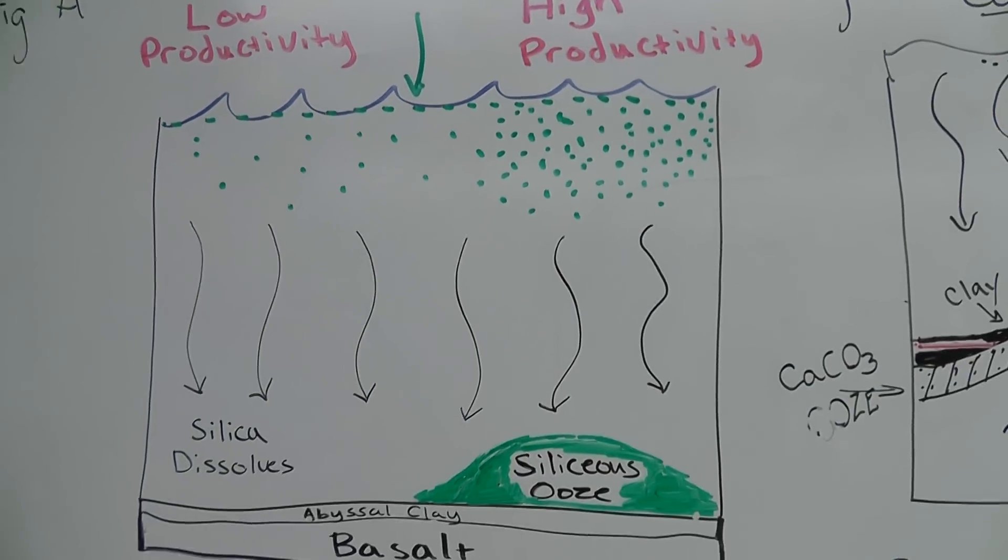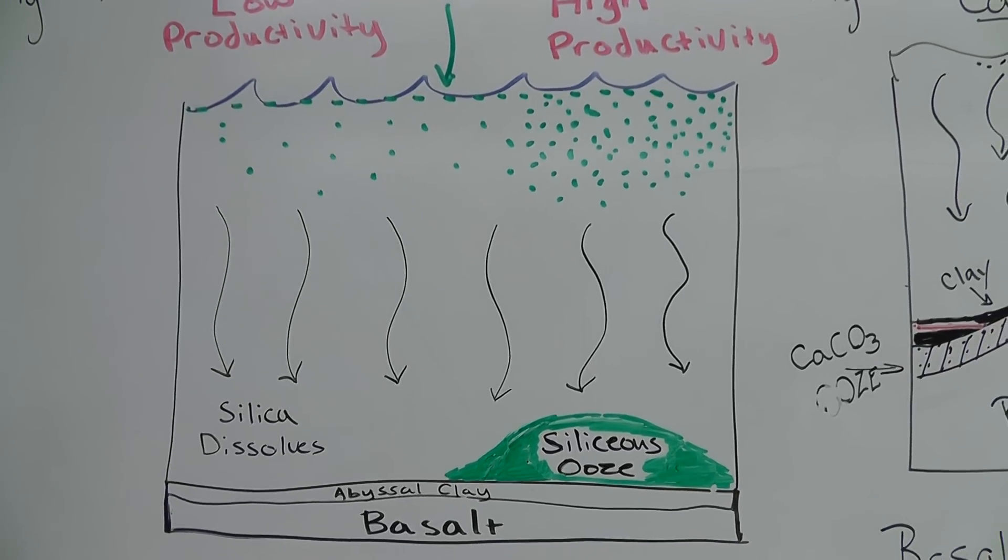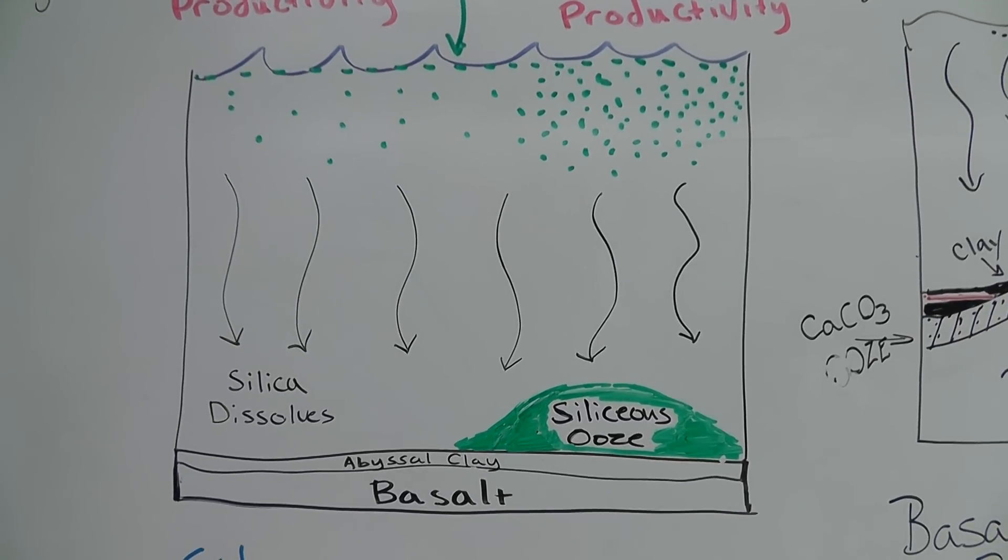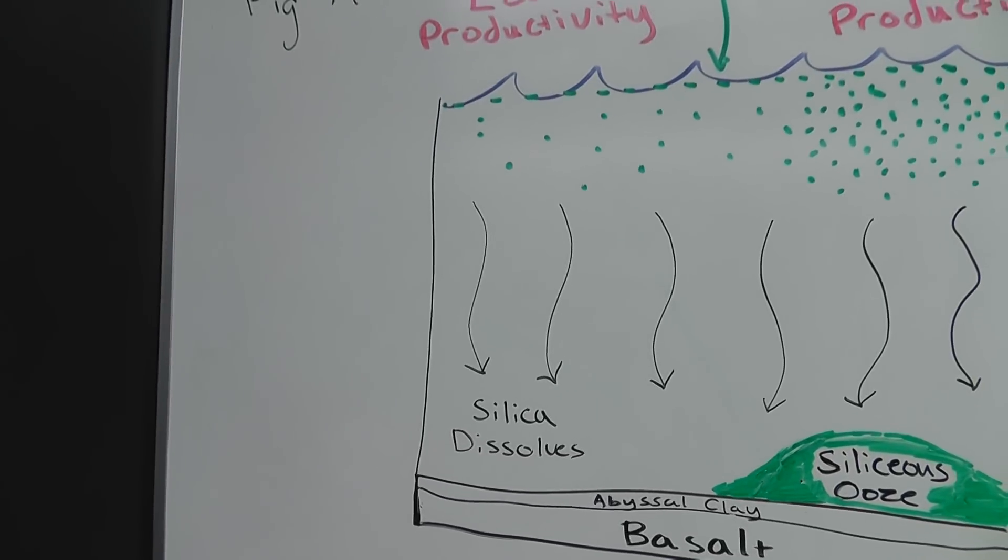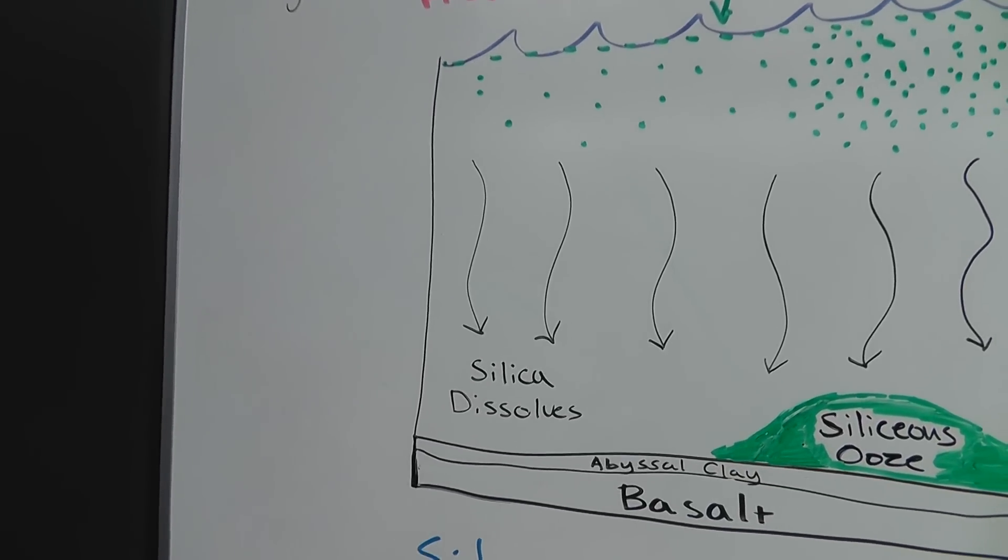So we look on the ground below the areas that we notice that the side with the area of high productivity has the most ooze. The side with low productivity has no ooze because the silica dissolves.